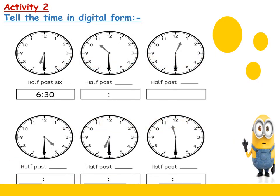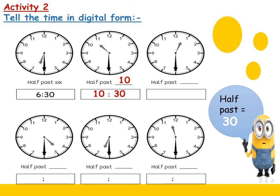Now we want to tell the time in digital form. We know that half past means 30 minutes — the half of an hour is 30 minutes. So when the long hand is on 6, if it's half past, the minutes will be 30. The first one: the short hand is on 10, so it's half past 10. Half past 10 means 10 and 30 minutes.